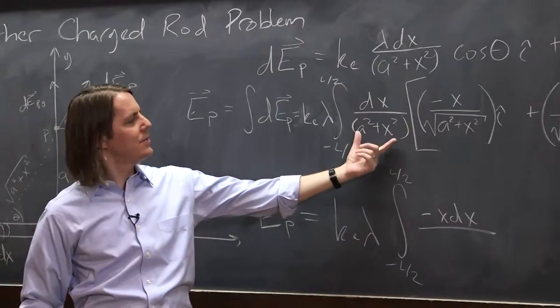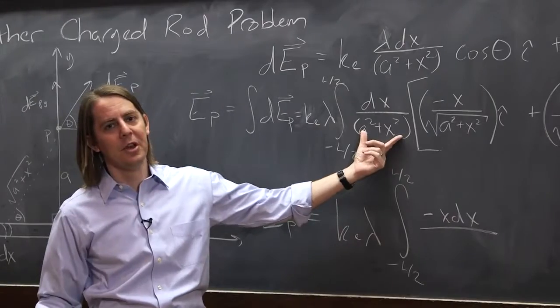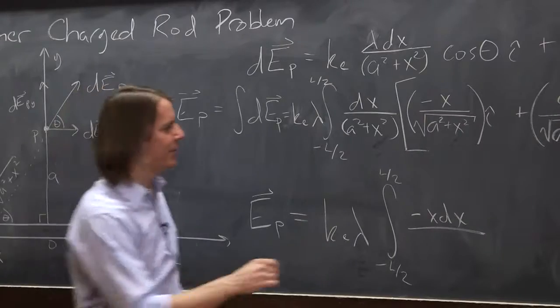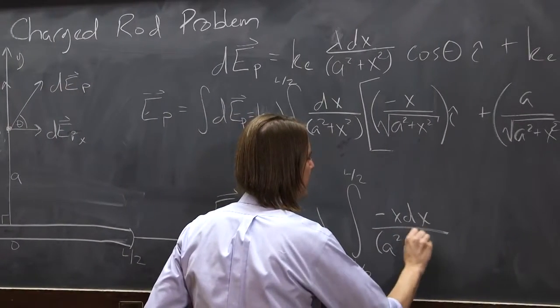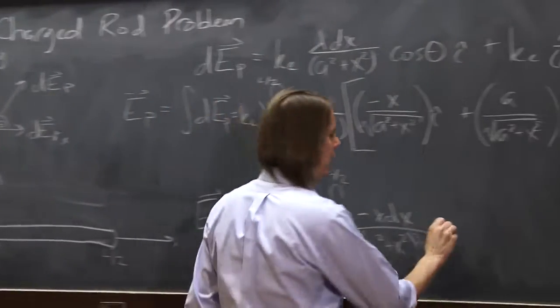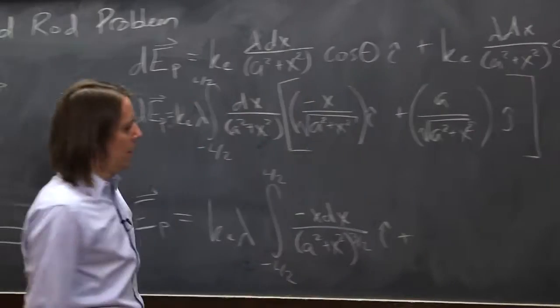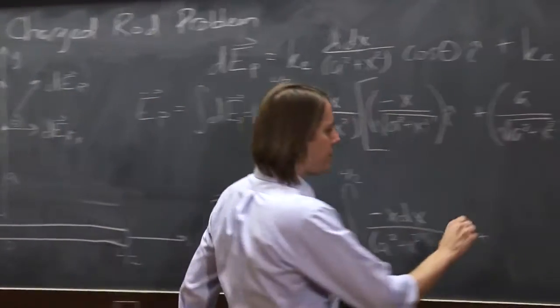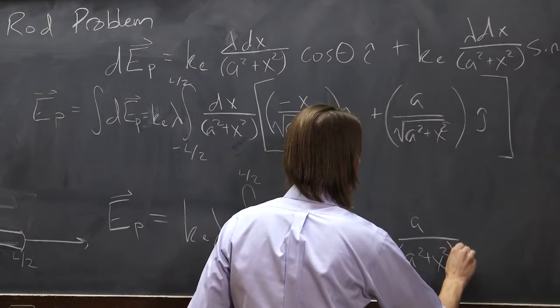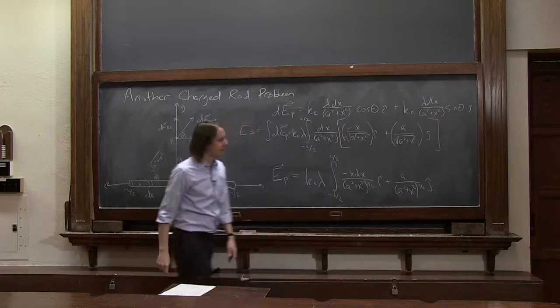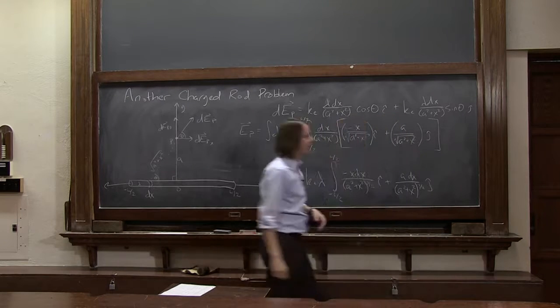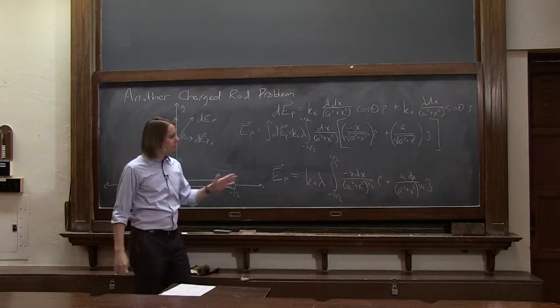will be minus x dx over, and now we're going to combine these. This is really a squared plus x squared to the 2 halves. This is a squared plus x squared to the 1 half. When you multiply them, you just add. That's how you get these funny things like a squared plus x squared to the 3 halves. So we just combine those two denominators. And that's on the i hat plus a dx over, the denominator is the same, a squared plus x squared to 3 halves on the j hat. And the integral applies to both terms. They both have a dx, of course. So all we've got to do is solve that integral.